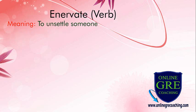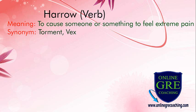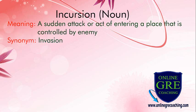Innervate: to unsettle someone. Harrow: to cause someone or something to feel extreme pain; synonyms are torment and vex. Incursion: a sudden attack or act of entering a place that is controlled by the enemy; synonym is invasion.